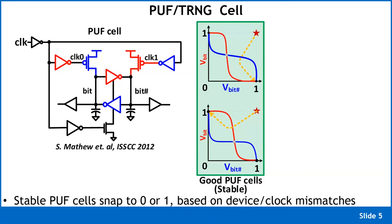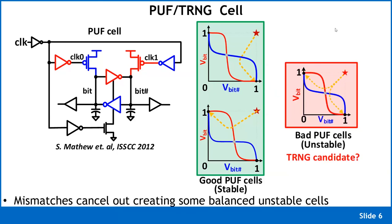However, around 12 devices are all fighting each other, and sometimes their mismatches cancel perfectly, resulting in a nearly balanced butterfly curve. These are bad PUF cells — on every clock edge they might go toward a one or a zero unpredictably. We spend a lot of energy identifying and weeding out these bad PUF cells from the array, ensuring only consistently-behaving cells contribute to the PUF value.